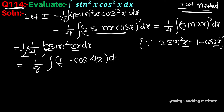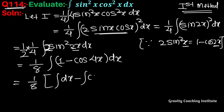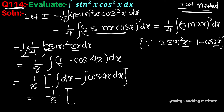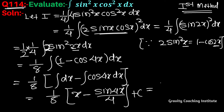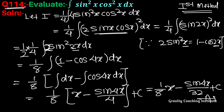So the integral becomes one by eight into integration of (1 minus cos 4x) dx, which equals one by eight into integration dx minus integration of cos 4x dx. This gives one by eight times x minus sin 4x upon 32, plus C — which is the required answer.